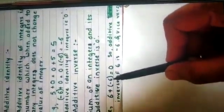Now, we will see what is the next property: additive inverse. Inverse means reciprocal, but here we are going to see about additive inverse. The sum of an integer and its additive inverse is always 0. For example, 6 plus minus 6 equals 0. So, additive inverse of 6 is minus 6, and additive inverse of minus 6 is 6.